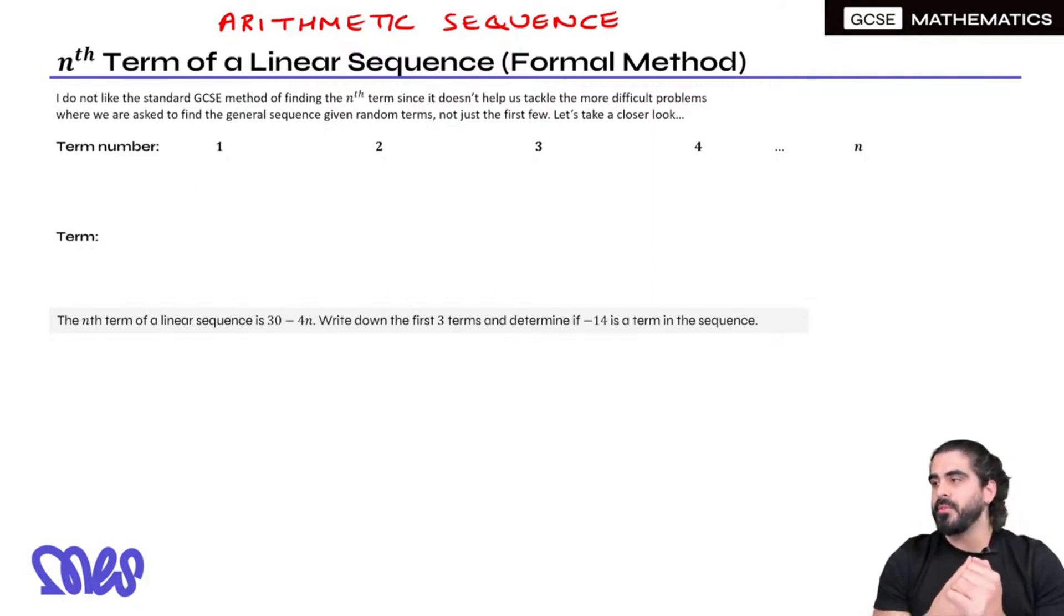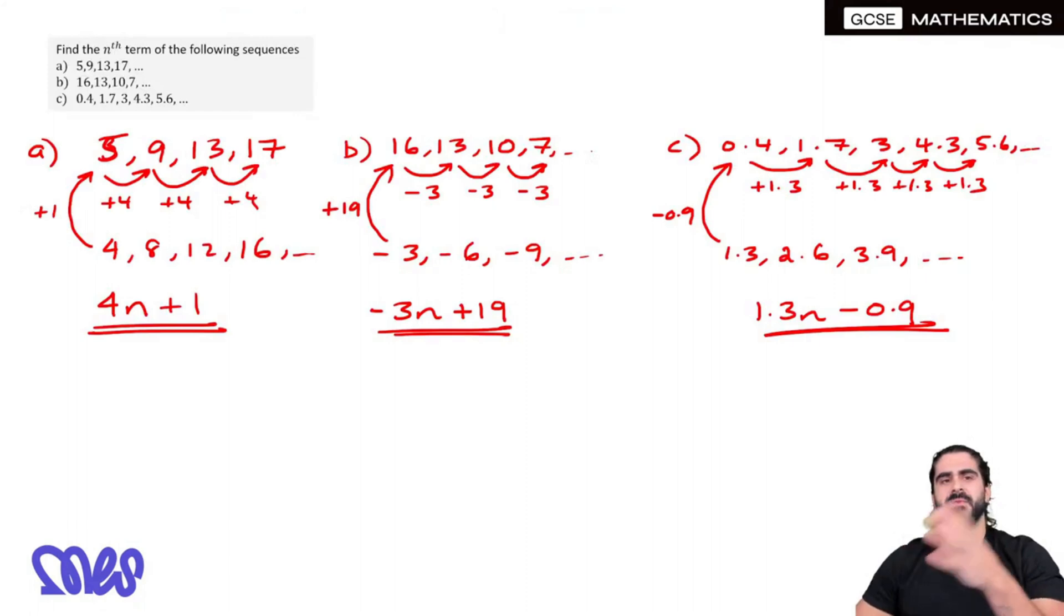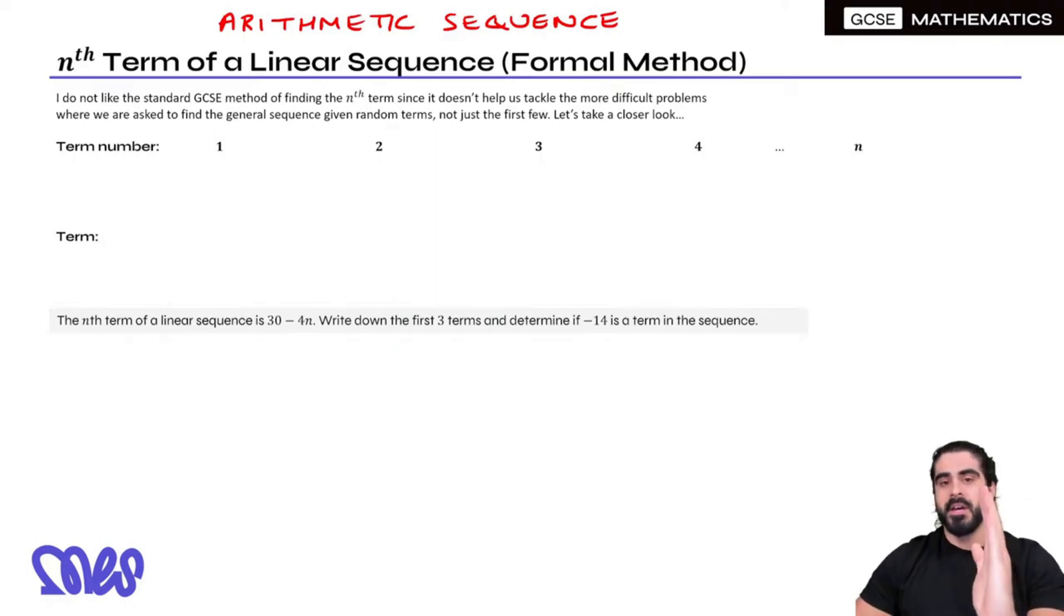So what is the formal method? I do not like the standard GCSE method of finding the N term, since it doesn't help us tackle the more difficult problems where we're asked to find the general sequence given random terms, not just the first few. What we've been doing so far is I've always given you the first four numbers. But what happens if I give you the third number in the sequence, and the hundredth number in the sequence? What do you do then? We can't find the common difference very easily. Between the third number and the hundredth number, you've got to calculate how many differences there are in between, and then students make so many mistakes.